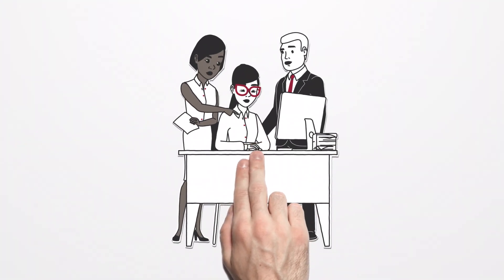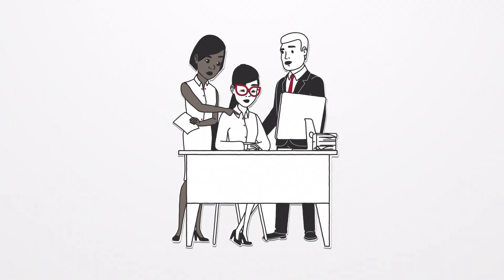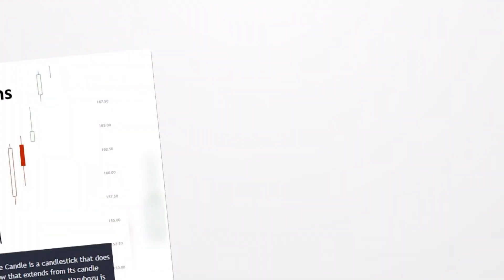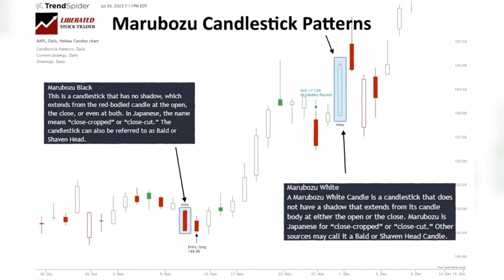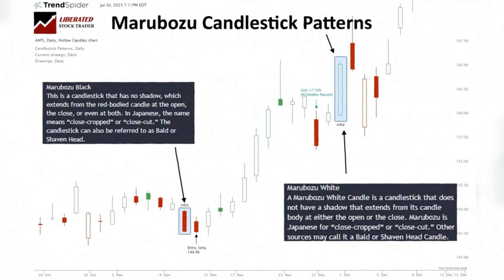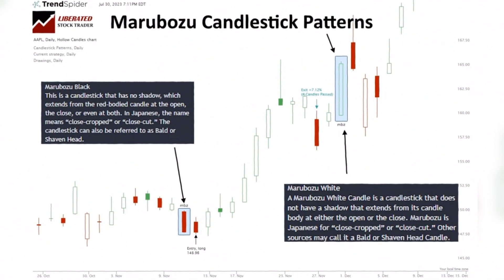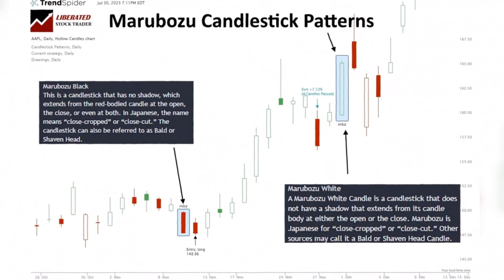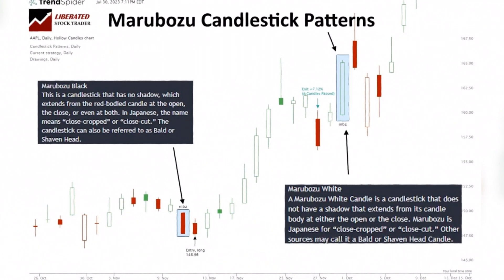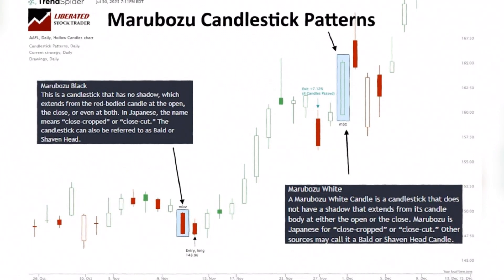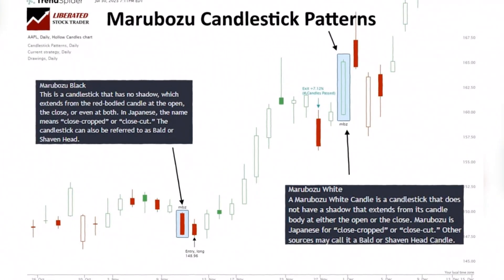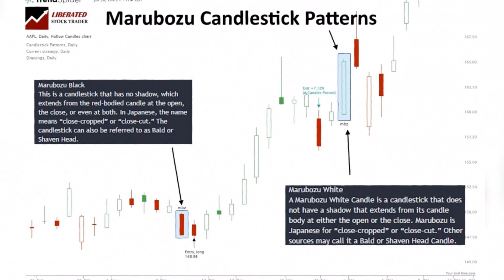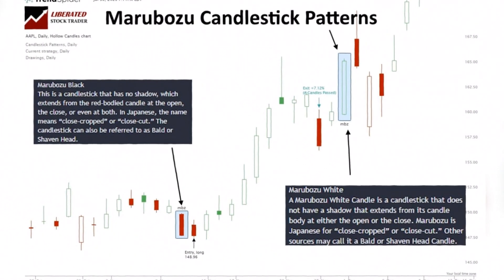The bearish marubozu has a 56.1% success rate, indicating a significant downward shift. It signals a strong downward price movement and forms when the open price is the highest for the period and the close price is the lowest. In other words, bears controlled the price from start to end, reflecting the dominance of selling pressure throughout the entire period.